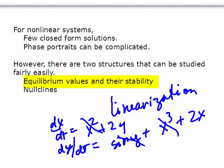The other structure that we're going to study are the nullclines. So the equilibrium values and their stability using linearization will show how the system behaves close to equilibrium values. The nullclines give us more of a global look at the solutions because they divide the phase plane into regions.